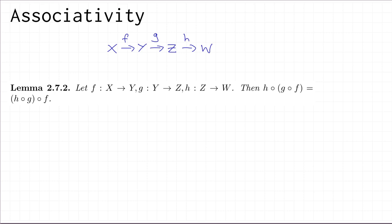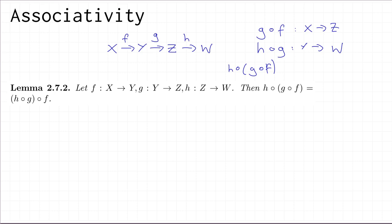It seems like we can form two different compositions of all three functions. Since g goes from Y to Z and f goes from X to Y, we can form g∘f from X to Z. We can then form h∘(g∘f) from X to W. We can also form the composition with brackets in the other place: (h∘g)∘f. Both of those are functions whose domain is X and whose codomain is W.